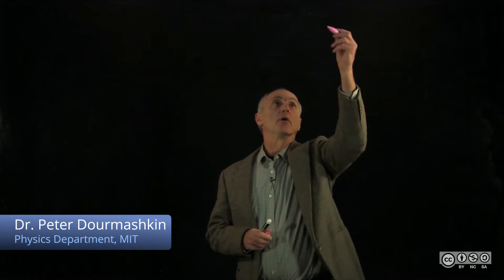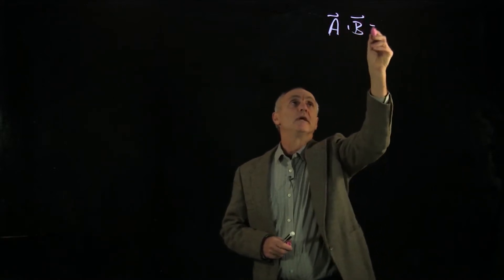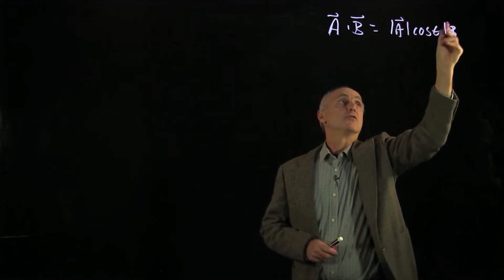We've so far described abstractly what we mean by a dot product by a definition of A dot B equals the magnitude of A times cosine theta times the magnitude of B.